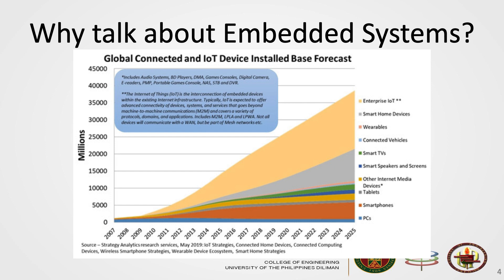Why talk about embedded systems? Because the growth in embedded systems has been remarkable since 2010 and will continue to increase. This graph shows the amount of IoT and connected devices projected until 2025. This includes smart home devices, wearable devices, connected vehicles, smart TVs, smart speakers and screens, internet media devices, tablets, smartphones, and other IoTs. All of these are embedded system devices.